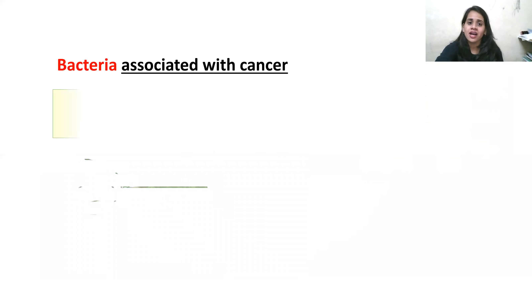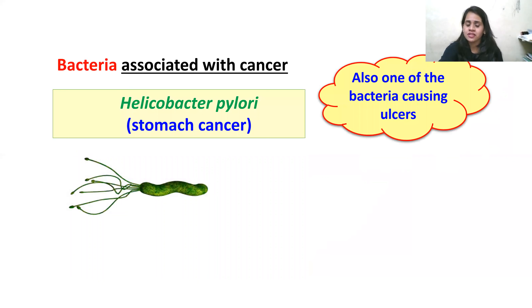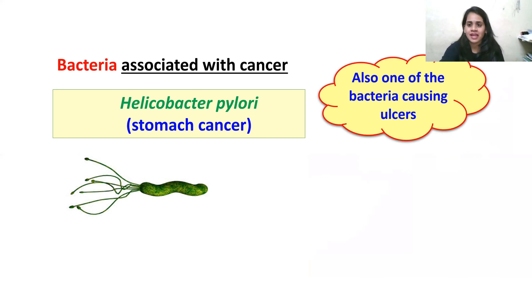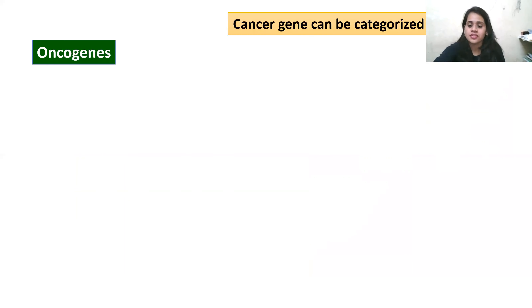For bacteria associated with cancer, Helicobacter pylori is one of the common reasons for stomach cancer. This bacterial infection also produces ulcers in your body.